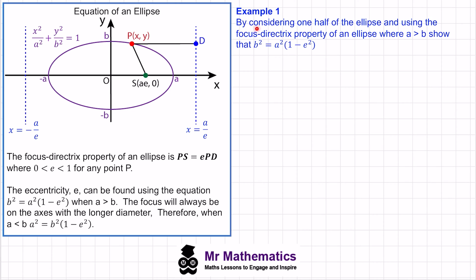In Example 1, we've been asked to consider one half of the ellipse and using the focus-directrix property where a is greater than b, we need to show that the standard equation holds. The first thing we do is look at the line PS. This length will be the difference between the focus point and the x value, so PS equals the square root of (ae minus x) squared plus y squared.